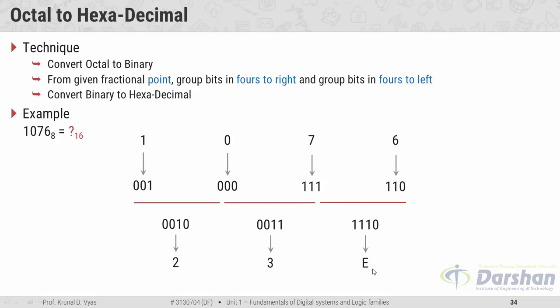Our final answer: 1076 in octal is converted to 23E in hexadecimal.